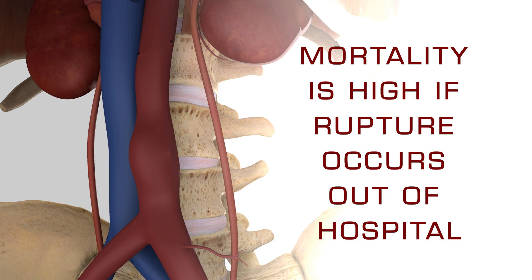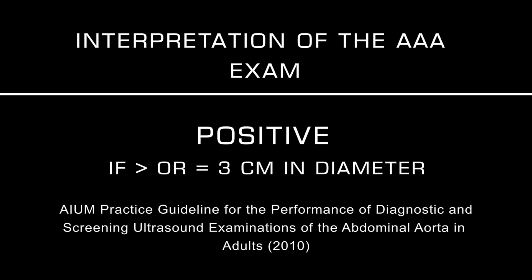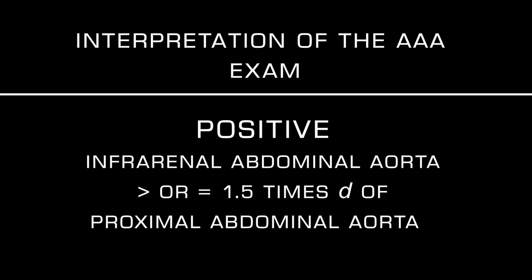The mortality rate is high if an abdominal aortic aneurysm ruptures outside of the hospital. Therefore, early diagnosis and intervention are recommended before the rupture occurs. The results of the examination for triple A are positive if the measurement of the abdominal aorta is greater than or equal to 3 cm in diameter, or if the measurement of the infrarenal abdominal aorta is greater than or equal to 1.5 times the diameter of the normal proximal aorta.